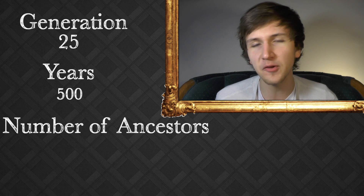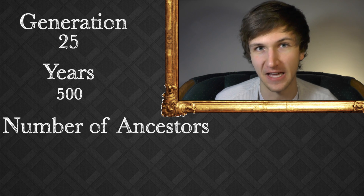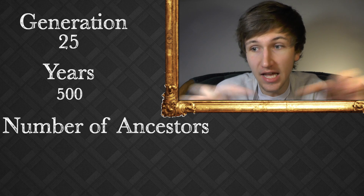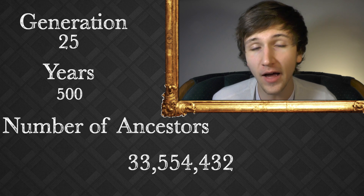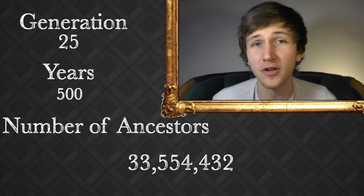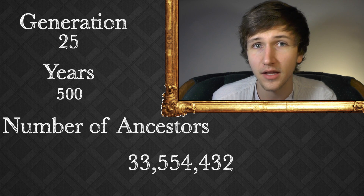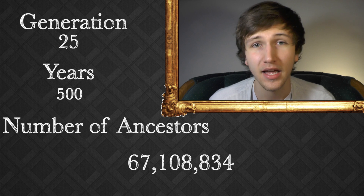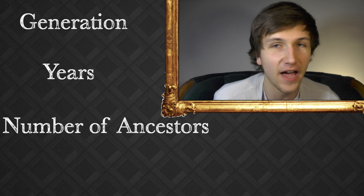How about 25 generations? That's about 500 years. This number is phenomenally much bigger than just 2,108. The 25th generation by itself, without counting everybody after it, contains 33,554,432 people. If you add everybody after the 25th generation to the 25th generation itself, you get 67,108,834 people — 67 million. That's just 500 years.